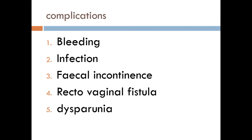What are the complications of perineal tear? Perineal tear can be complicated by bleeding, infection, fecal incontinence if the tear is neglected, and rectovaginal fistula can develop, especially if infection occurs in the suture or if the rectal mucosa is included by the suture during repair. Also, the patient may complain of dyspareunia.